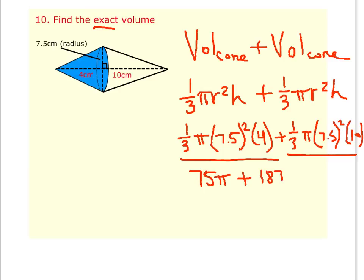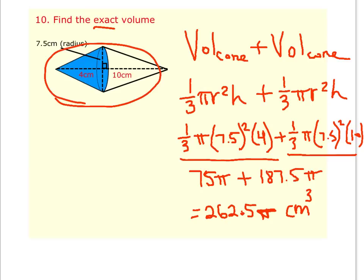you get 187.5π. And then when you add those two together, you get 262.5π, and that is centimeters cubed. So 262.5 cubic centimeters would be the total volume of this shape.